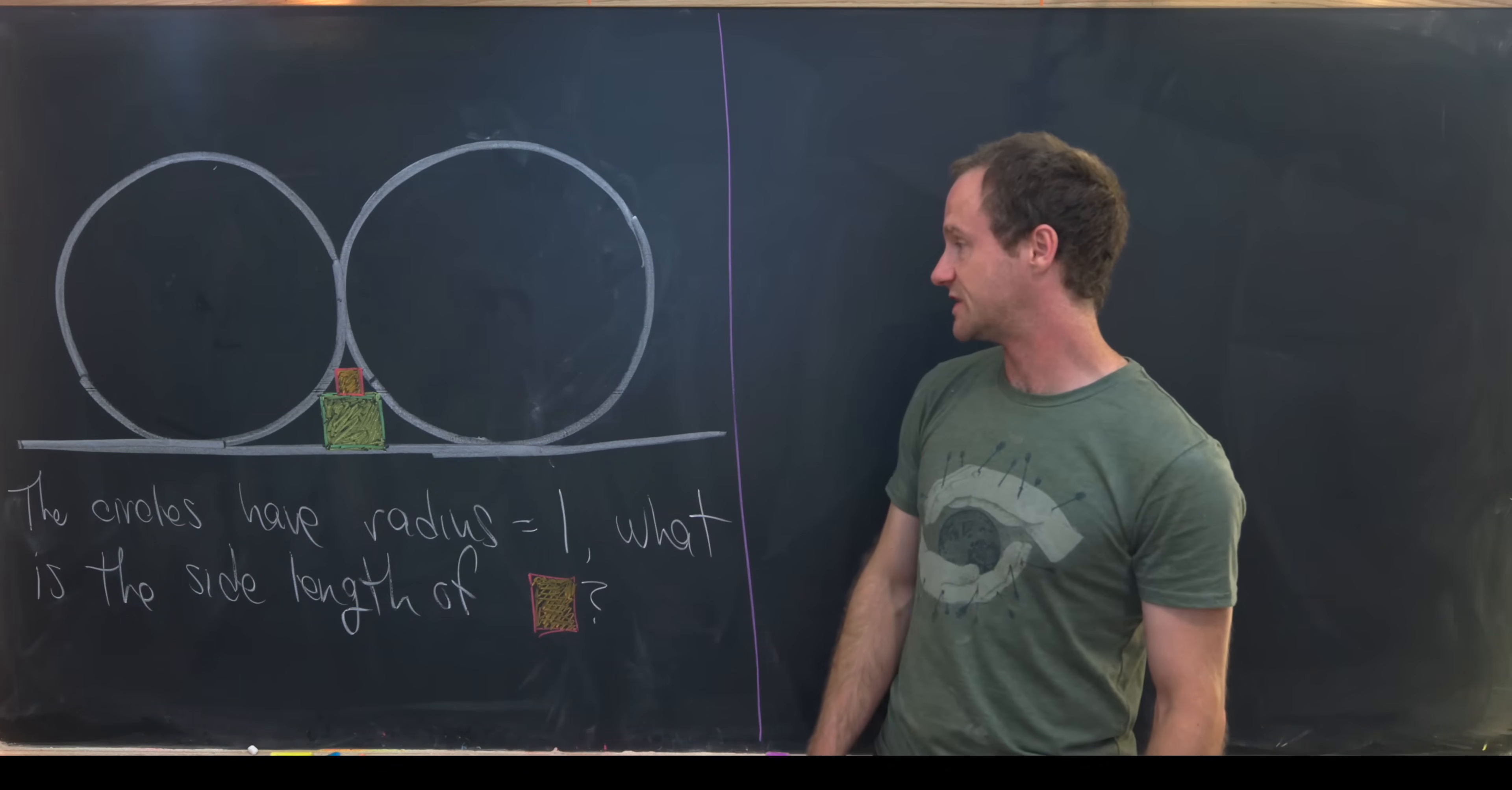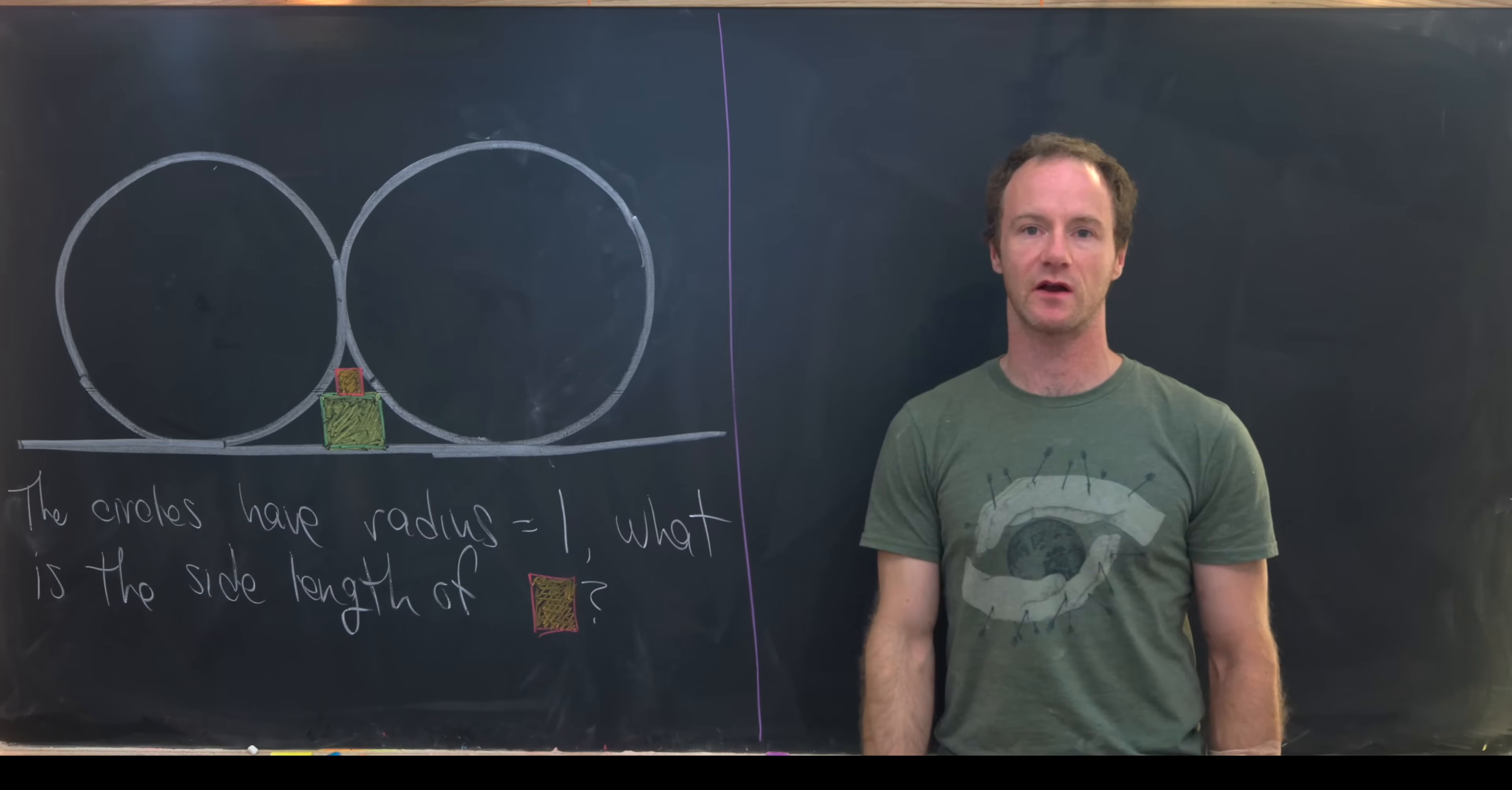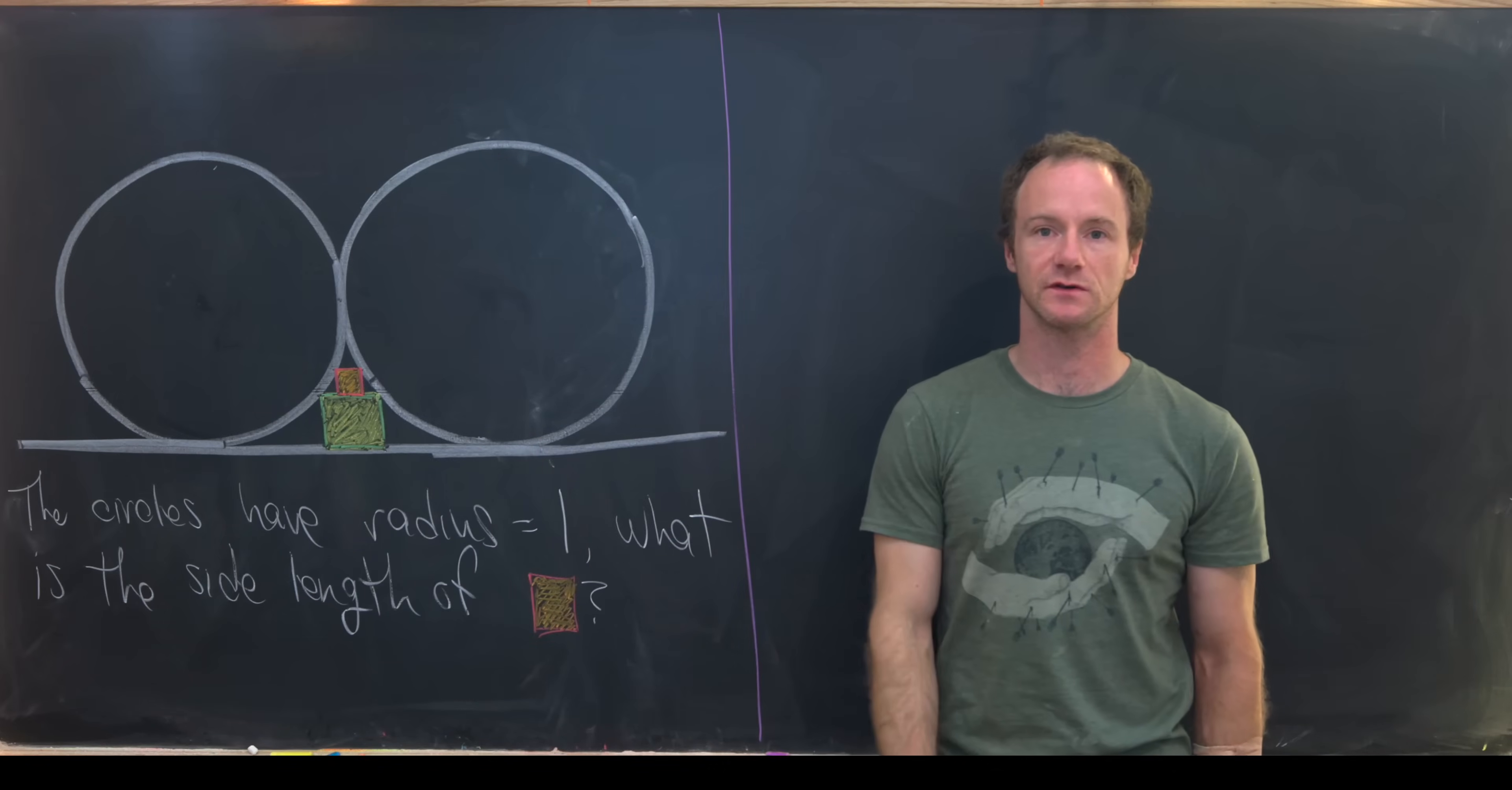And our goal is to determine what the side length of this orange square is. Obviously along the way we're probably going to need to find the side length of this yellow square as well. Notice this yellow square has been inscribed between the horizontal line and the two circles, and then our orange square has been inscribed between this yellow square and the two circles.